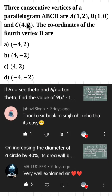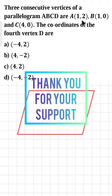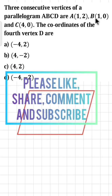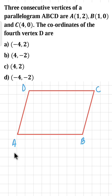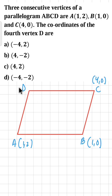Three consecutive vertices of a parallelogram ABCD are given: A(1,2), B(1,0), and C(4,0). We need to find the coordinates of the fourth vertex D. We have four options and we have to select the correct one. This is a parallelogram named ABCD.